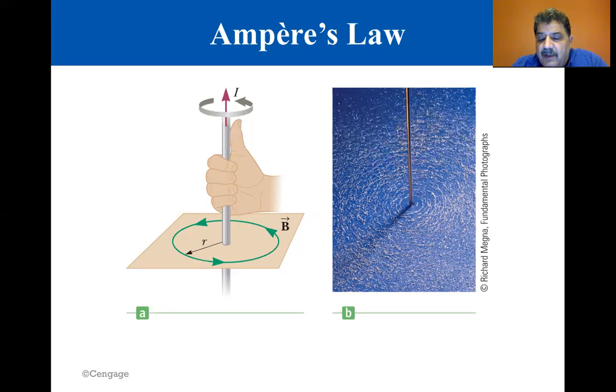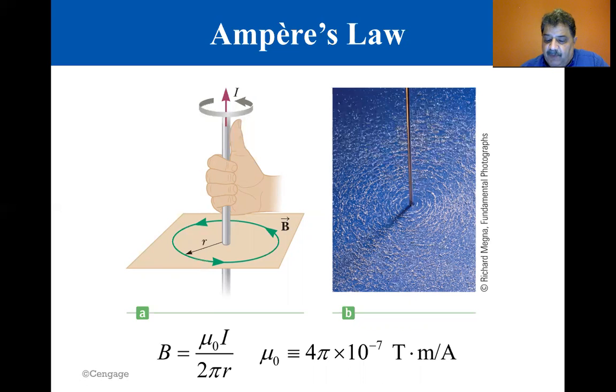By varying the current and distance from the wire, it can be experimentally determined that B is proportional to the current and inversely proportional to the distance from the wire. These observations lead to a mathematical expression for the strength of the magnetic field due to the current I in a long straight wire. The proportionality constant mu sub zero is called the permeability of free space. So the magnetic field B is equal to mu zero I divided by two pi R, where mu zero is four pi times ten to the minus seven tesla meters per amp.